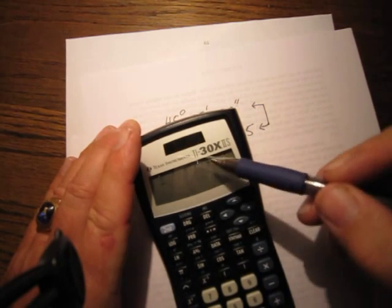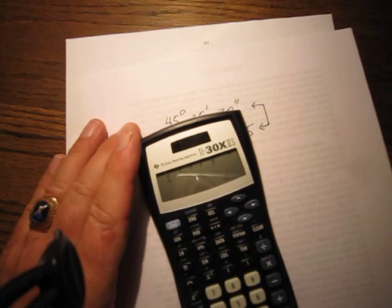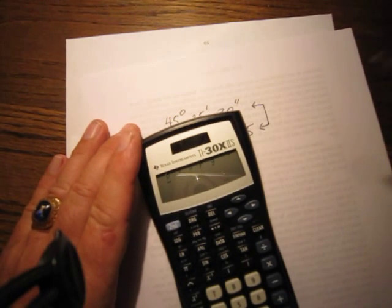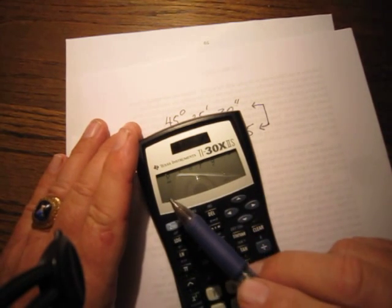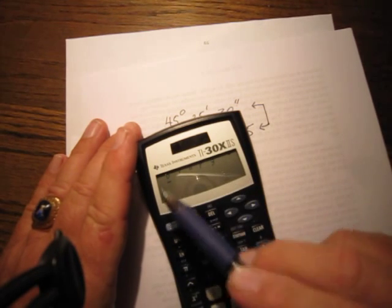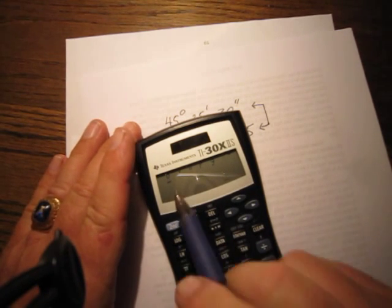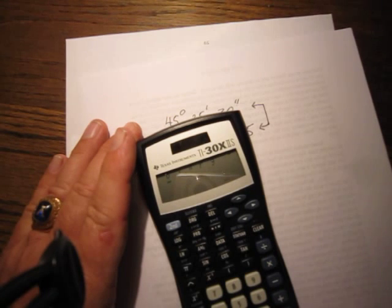And then it's got R and G. This is radials. And I don't even know what G is. So you have to tell it degrees. Degrees, all right?